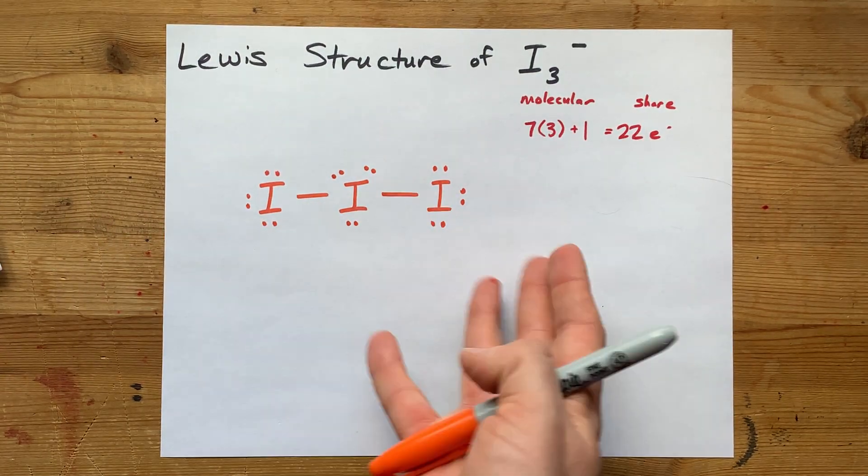If you have an incomplete octet on the center, which we don't—we actually completed it and expanded it—then we would move lone pairs from the outer atoms into the bonds to make double and triple bonds until that center atom had a full octet. That's not a problem here. We're done.